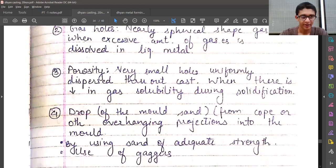The third is porosity—very small holes uniformly dispersed throughout casting. When there is decrease in amount of gas solubility during solidification, porosity can occur.